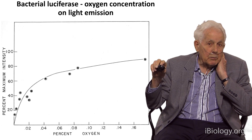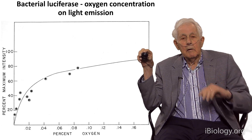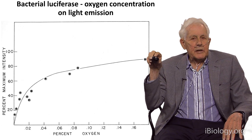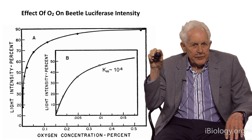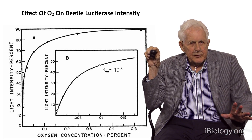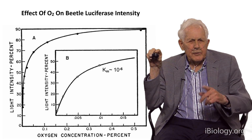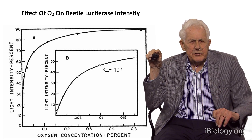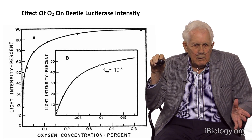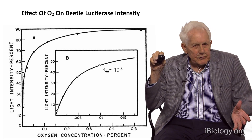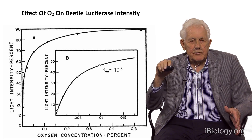Many people are willing to believe that bacteria could have evolved bioluminescence, but they are scarcely willing to think of fireflies. But here's firefly — beetle — luciferase. You see that the data goes down to oxygen concentrations that are clearly orders of magnitude below that present in the atmosphere today.